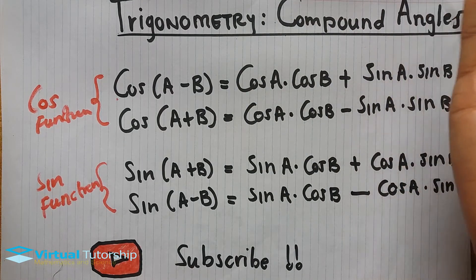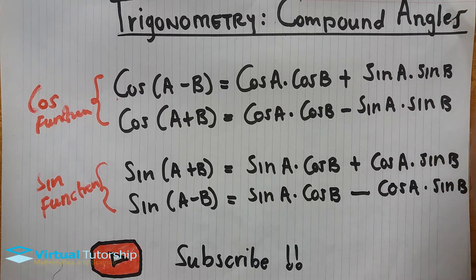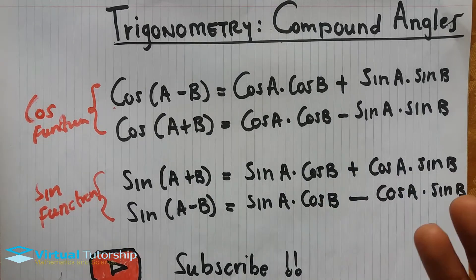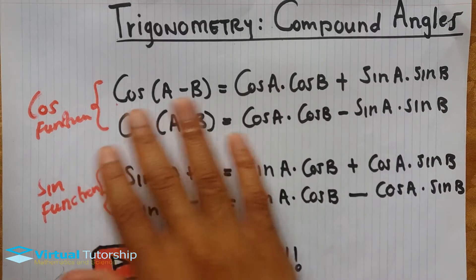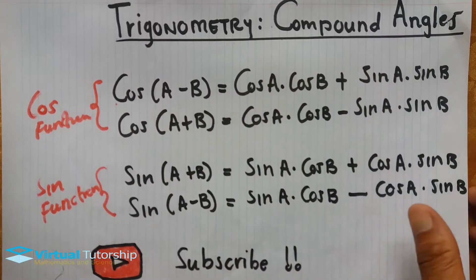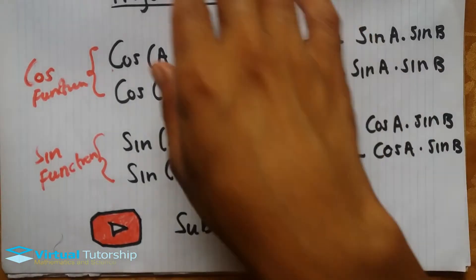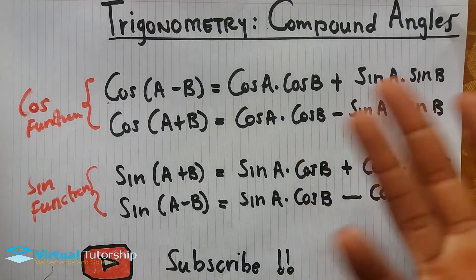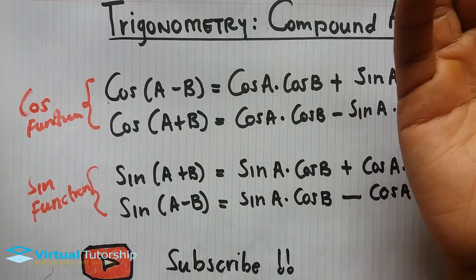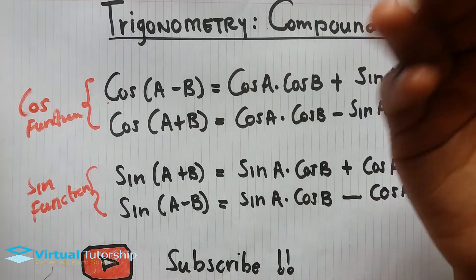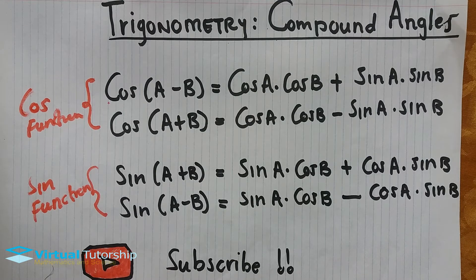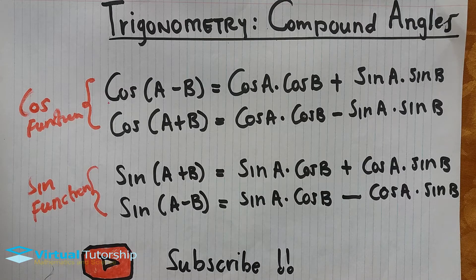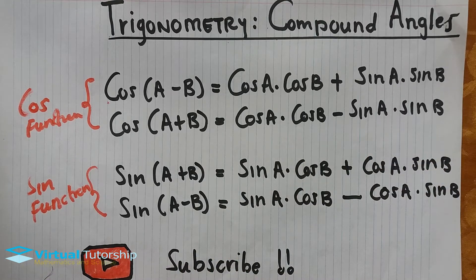Reduction formulas can be classified as compound angles, but since reduction formulas are already in simplified form, there's no need to apply compound angle formulas to utilize their solutions. Compound angles are a means of proving reduction formulas, and they're also powerful and useful in solving any trigonometric identities.